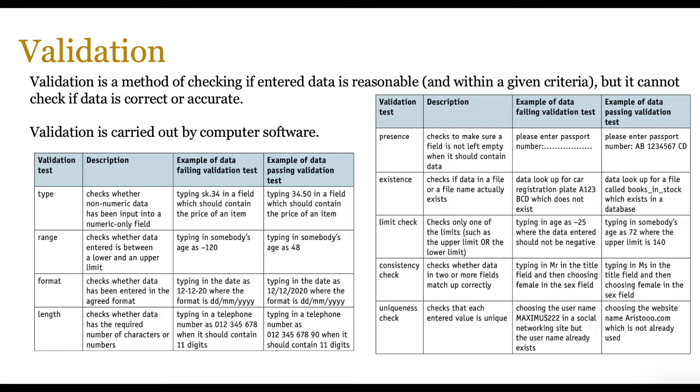For example, type checks, length checks, range checks—these are pretty common. Present checks, especially when you're online and you have to enter important data. If you leave a field blank, the computer doesn't accept that; that's present check. Length check checks whether the data has the required number of characters, especially think about passwords. Format check checks whether data has been entered in the agreed format, like date-date-month-month-year-year. Postcode is another example which uses format checks.